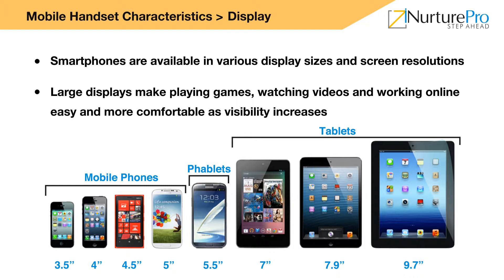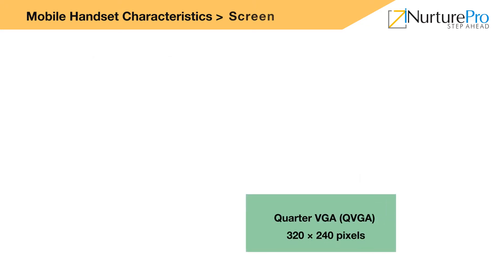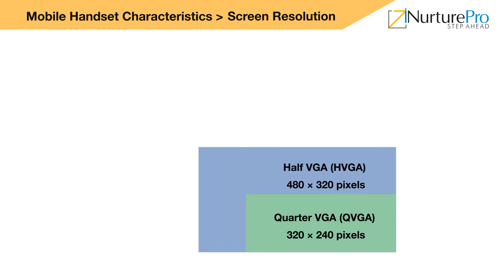Smartphones are available in various display sizes and screen resolutions. Mobile phone price is proportional to its display size. Quarter VGA (QVGA): It is the smallest acceptable screen size for a smartphone. A QVGA screen consists of a resolution of 320×240 pixels, which is a quarter of the standard VGA resolution. Half VGA (HVGA): An HVGA screen consists of a resolution of 480×320 pixels. It is the most common display size for standard phones.